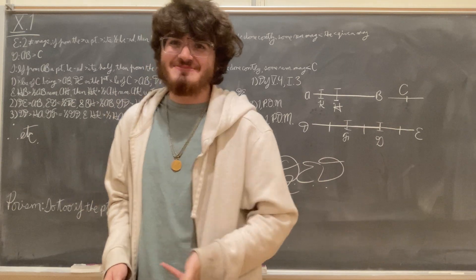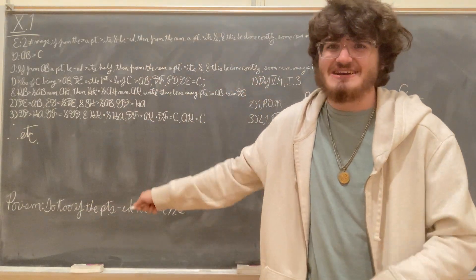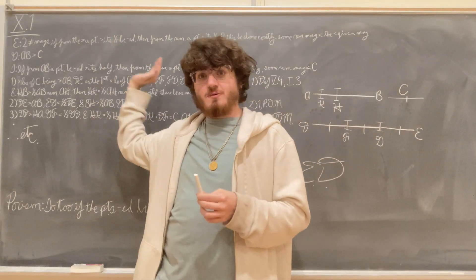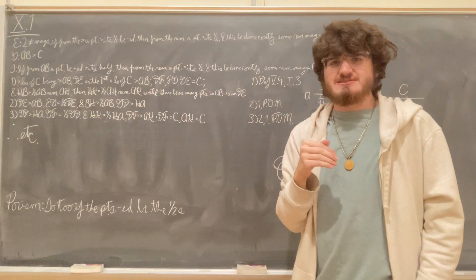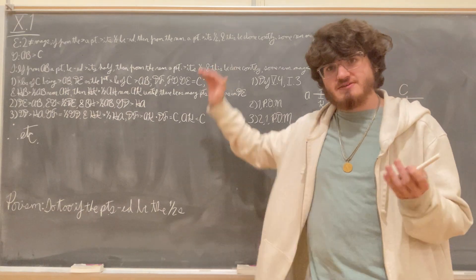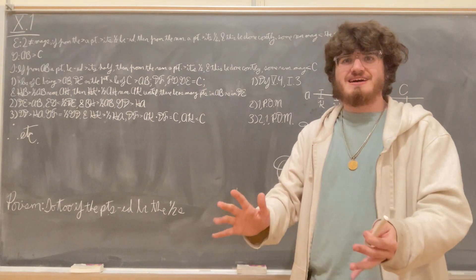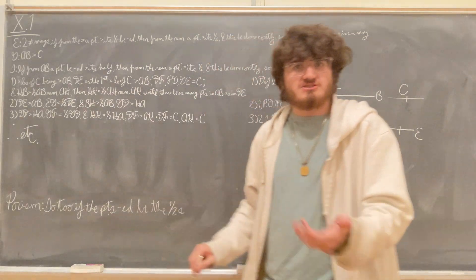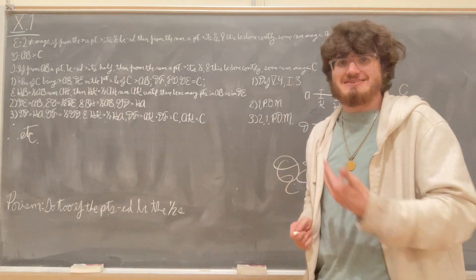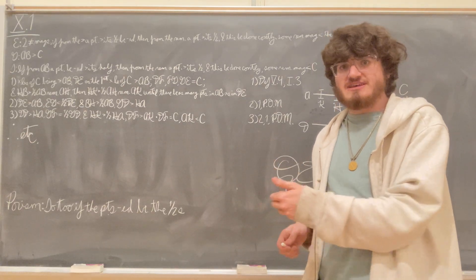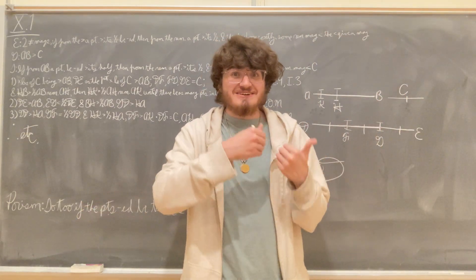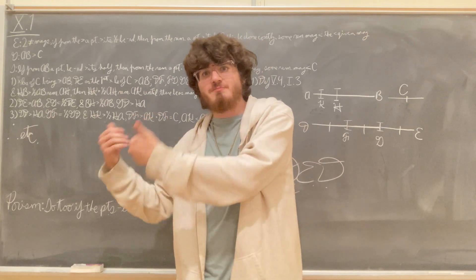I almost forgot to mention: there's a porism appended to this proposition. It's very simple — it states that if instead of cutting off parts greater than the half of a magnitude we cut off parts equal to the half, this proposition will still work the exact same way. I'm not going to go through that, but if you follow the logic out it'll work. This porism is also quite important, because sometimes we'll want to subtract parts exactly equal to the half, and this proposition still assures us that we can get a magnitude to be however small we want it to be.